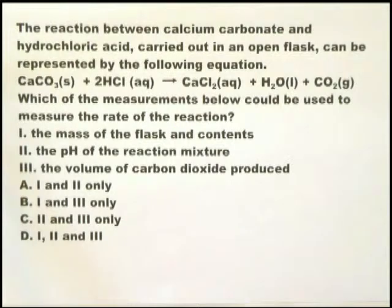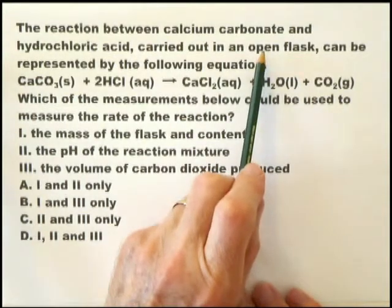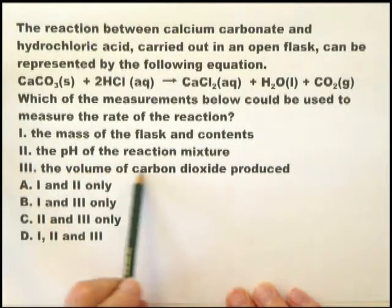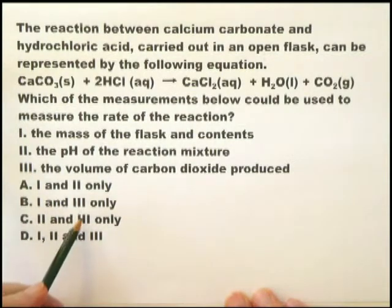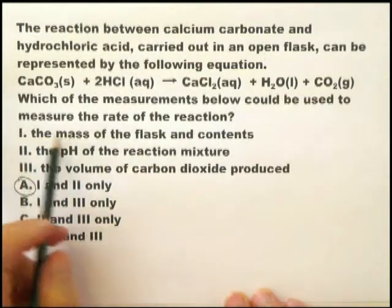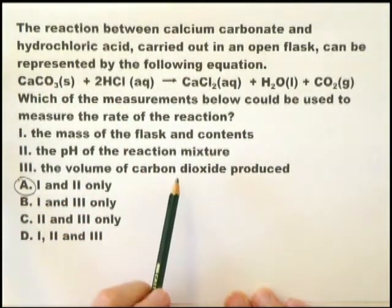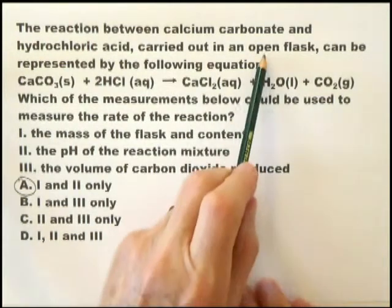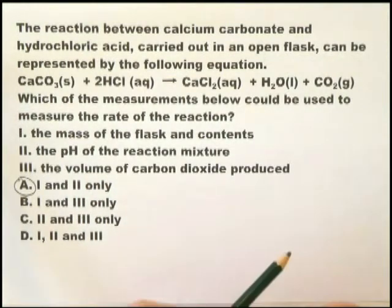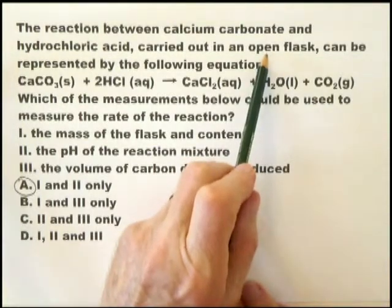This is one of those questions where just one word tells you the answer, and that one word is 'open.' The reaction is carried out in an open flask, so it's impossible to actually measure the carbon dioxide produced — so option three is wrong. If three is wrong, the answer must be option I. The mass of the flask and contents? Yes, that's one way of doing it. The pH of the reaction mixture? Yes, that's one way too. Because to measure the volume of carbon dioxide, you would need a closed system with a gas syringe or something of that nature.